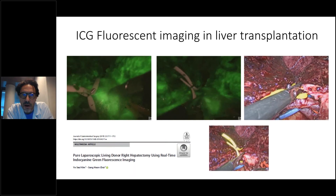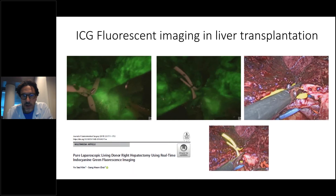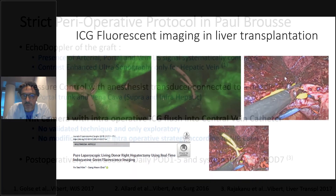As you probably know, ICG fluorescence imaging in liver transplantation has been mainly used in the field of living donor. On this slide, you can see very good visualization of the bile duct convergence, allowing the bile duct to be cut in exactly the right position during living donor hepatectomy. My objective today is not to focus primarily on this use of ICG, as it is more commonly discussed in the context of laparoscopic hepatectomy.